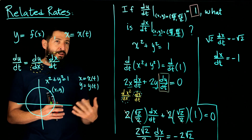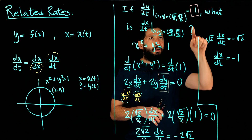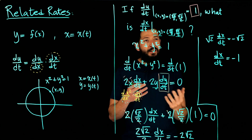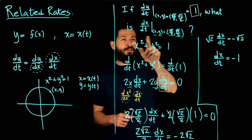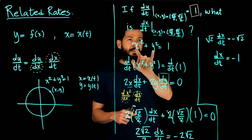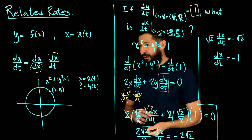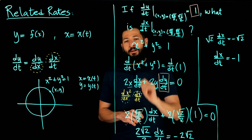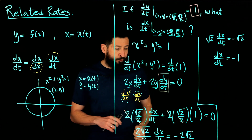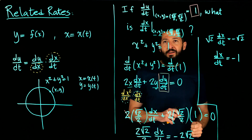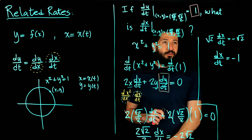That makes sense on the circle specifically because we chose the point where x equals y. If you chose any other point in this quadrant, as y changes at rate 1, x would change at a different rate. That's why these are called related rates — you have a relation that ties two variables that both depend on time.